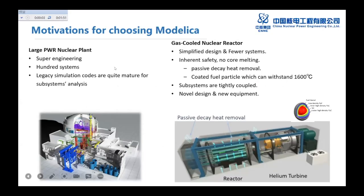And here I want to discuss about why choosing the Modelica. Because let's look at the large nuclear plant first. And it's a super engineering, consists of usually 100 systems. And a lot of legacy simulation code are quite major for the subsystem design. But most of these legacy simulation codes were developed maybe 20 years ago, 30 years ago. So these codes usually simulate one subsystem or a few phenomenons.